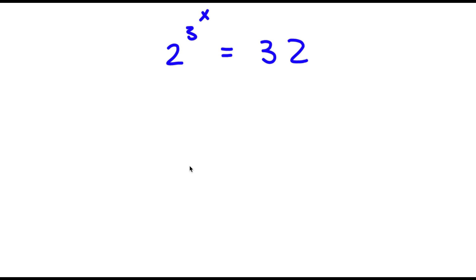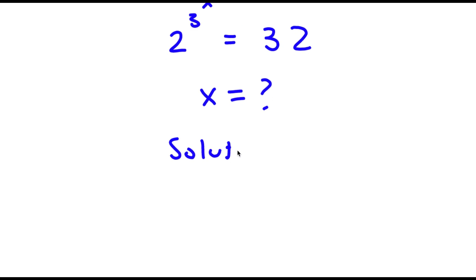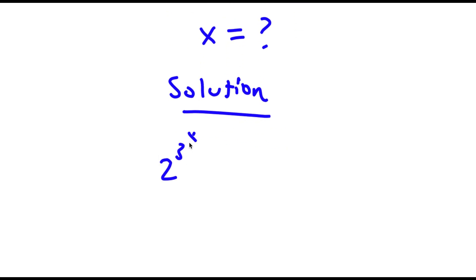Alright, so I have 2 to the power of 3 to the power of x is equal to 32. So the first thing I'm going to do to solve this problem is make both of these bases the same. I obviously want to find the value of x here. So for my solution, first: 2 to the power of 3 to the power of x is equal to 32.